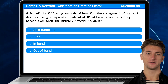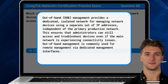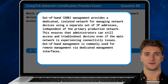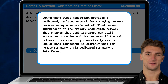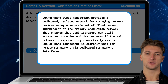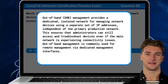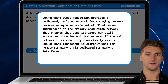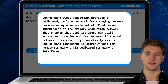The answer is D: out-of-band. Out-of-band management provides a dedicated, isolated network for managing network devices using a separate set of IP addresses, independent of the primary production network. This ensures that administrators can still access and troubleshoot devices even if the main network is experiencing connectivity issues. Out-of-band management is commonly used for remote management via dedicated management interfaces.